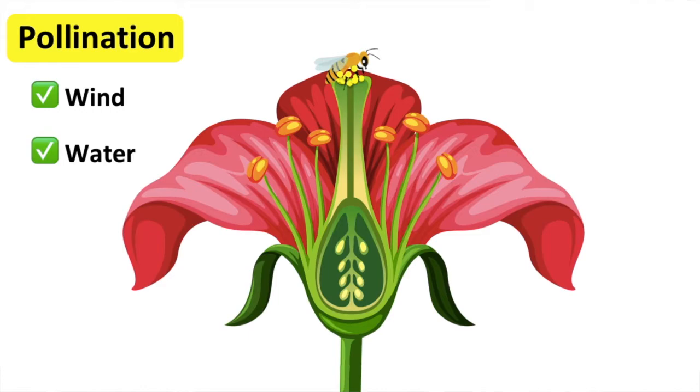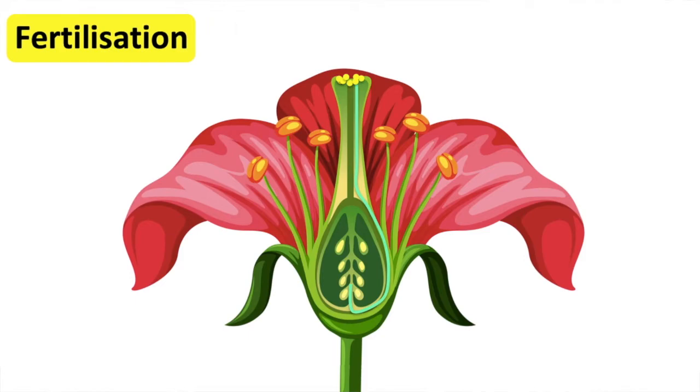Plant fertilisation is the process in which the male and female gametes are fused together in order to produce a fertilised egg. The pollen that's transferred to another flower's stigma initiates the process of fertilisation.